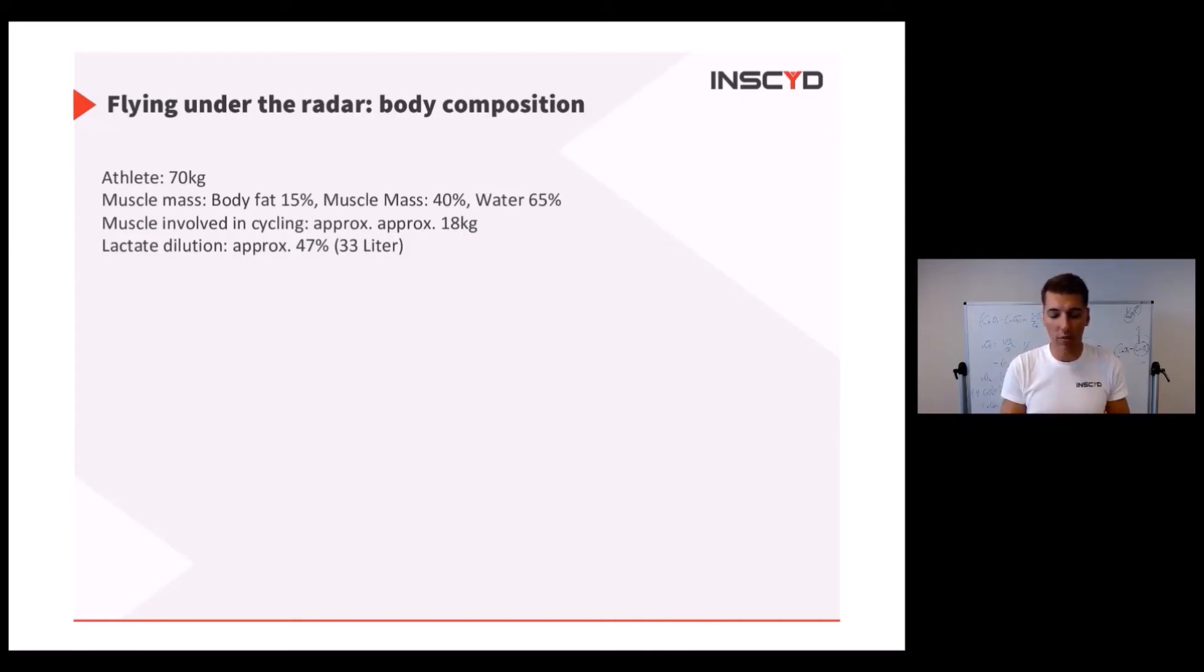So the space for lactate to dilute is approximately 33 liters. Now we put him on the bike ergometer and let him do some exercise. We let him ride for five minutes. And because of the intensity of the exercise, let's say he accumulates... This is very simplified, by the way. It's not correct, but it's a simplified way to show you the problem. Let's say he's accumulating 1.5 millimoles of lactate per minute.